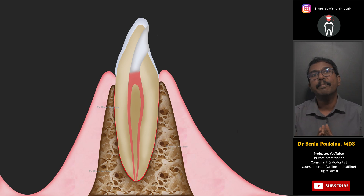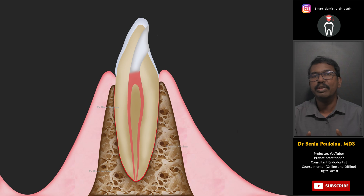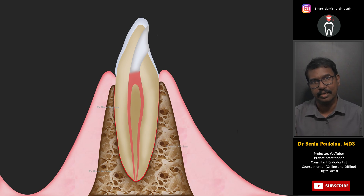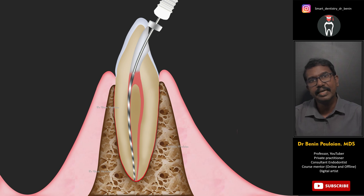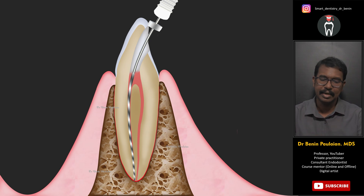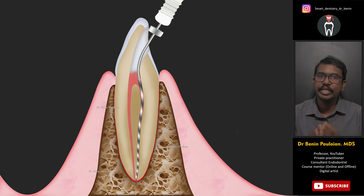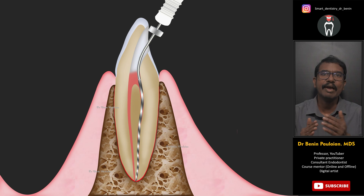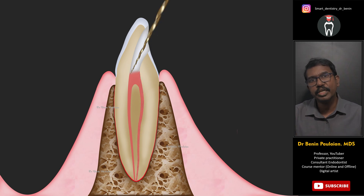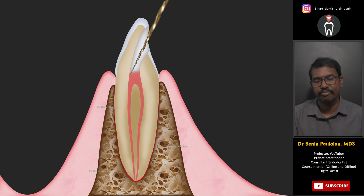Let's look at a mandibular incisor. We all know that in many situations — maybe around 40% of the time — mandibular incisors will have two root canals: the labial and the lingual. The labial one is easier to locate, negotiate, and shape, while the lingual canal is often missed. Whenever we attempt to negotiate with a hand file, the file automatically goes inside the labial canal. By making a small curvature, we can negotiate the lingual canal with a hand file and extend the access cavity slightly more lingually.